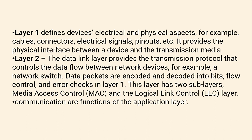Layer 2 is the data link layer, which provides the transmission protocol that controls data flow between network devices. Data packets are encoded and decoded into bits, and it handles flow control and error checks for layer 1. This layer has two sublayers: media access control (MAC) and logical link control (LLC).